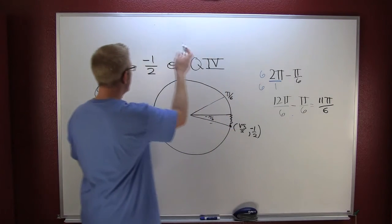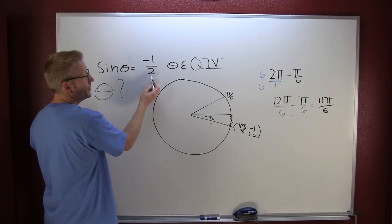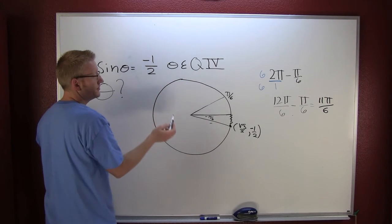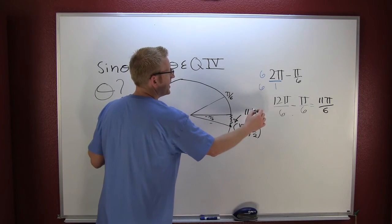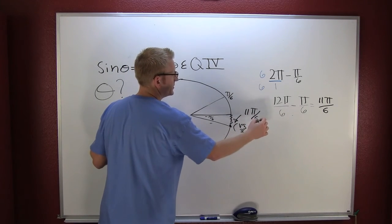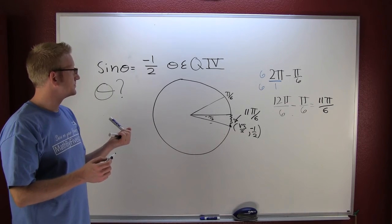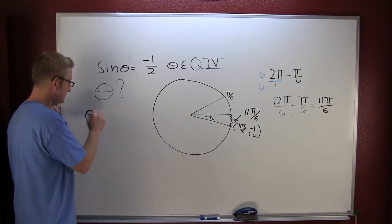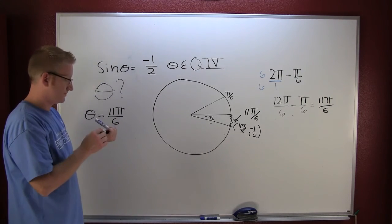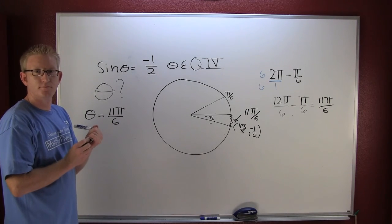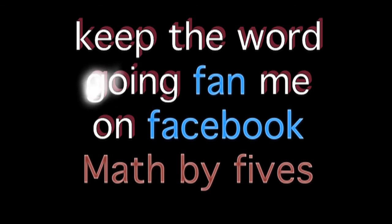So where is sine equal to negative one-half when theta is in quadrant four? Right there. What's that radian measure? 11π/6.